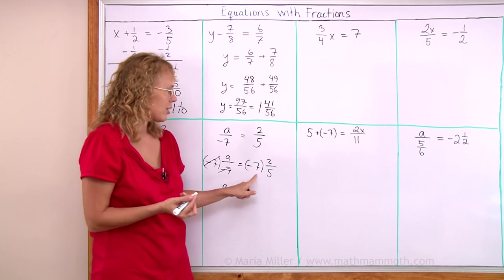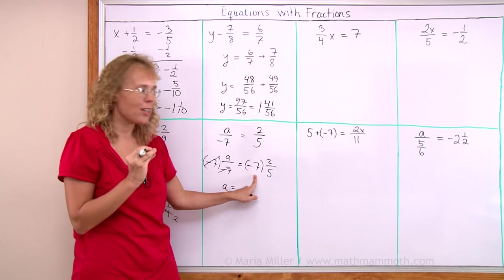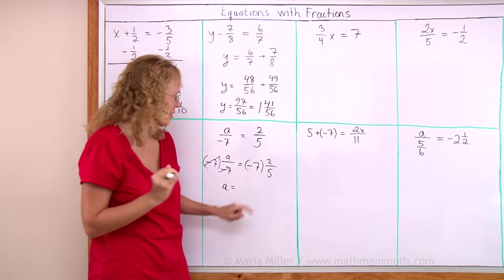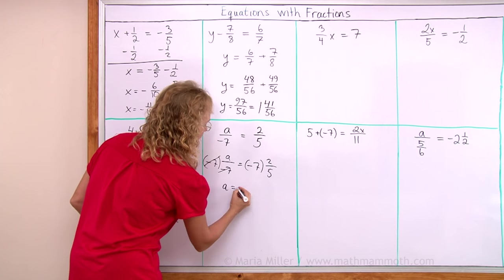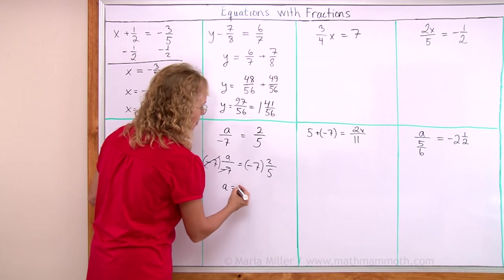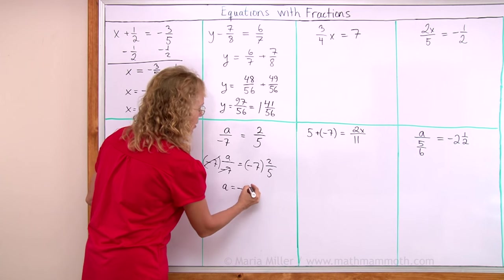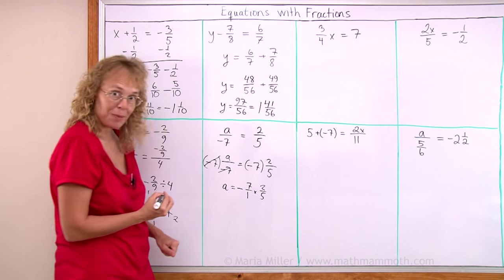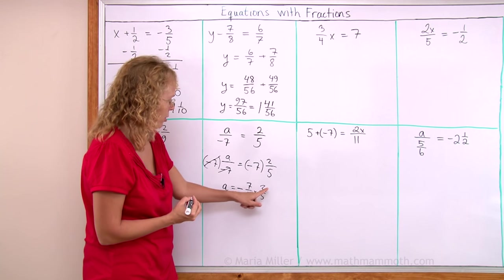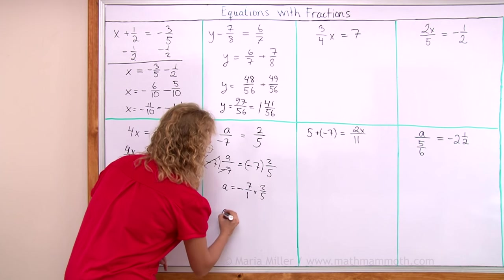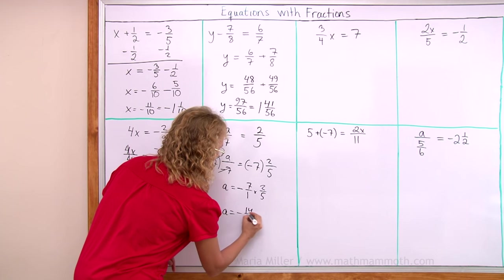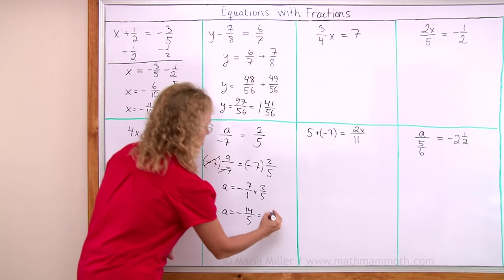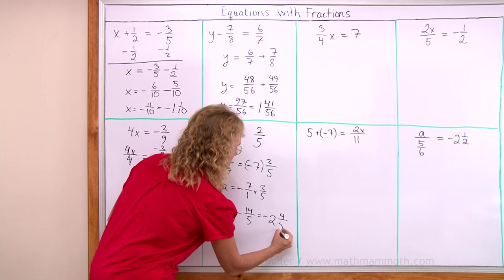Now here is a whole number times a fraction. It's a negative number so my answer will be negative. Think of it as 7 over 1 times 2 fifths if that is easier. We get 14 over 5 equals negative 14 over 5 which is the same as negative 2 and 4 fifths.